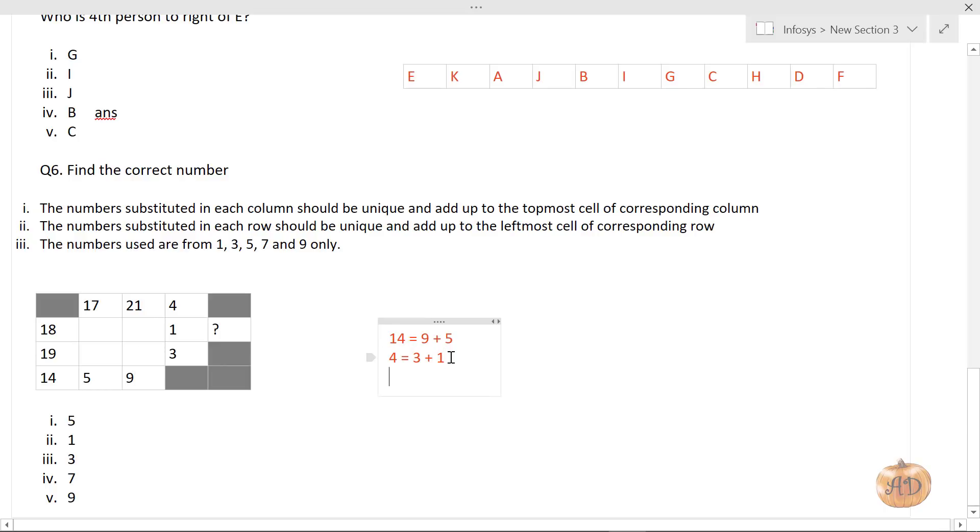How can I make 21 after using 9 here? I cannot use 9 again, so I need to make 12. To make 12, I have only 5 and 7. 5 and 7 make 12, no other possibility. I have to use 5 either here or here. Let's choose 7 here and 5 here. Why? Because 19 is bigger, so I place 7 here, and 18 is smaller, so I place 5 here.